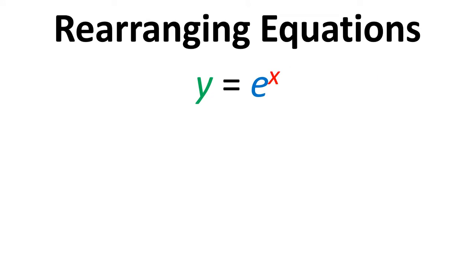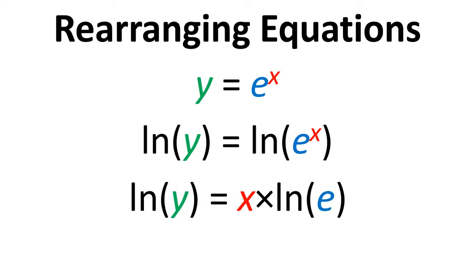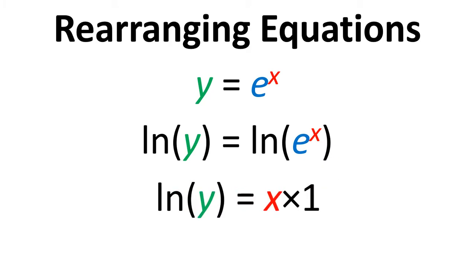If we think about rearranging an equation where we have y equals e to the power of x, we can take the natural log of both sides. Because of the rules of logs, we can move the x outside of the log term, and the natural log of e is just 1, so overall we have x equals the natural log of y.